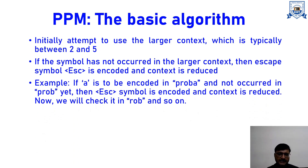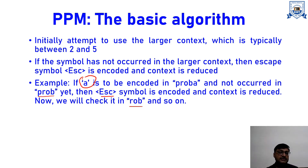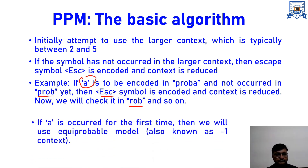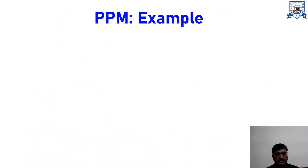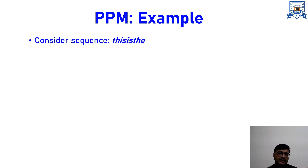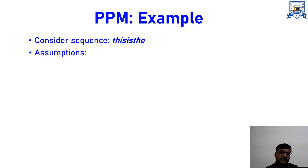Here is one example: if we are looking for symbol A in a fourth order context like PROB, and it is not available, we encode escape and reduce the context to 3, which is ROB. If it is not there in ROB either, we reduce the context further to 2, then 1. The minimum context is minus 1, which means the symbol is occurring for the very first time.